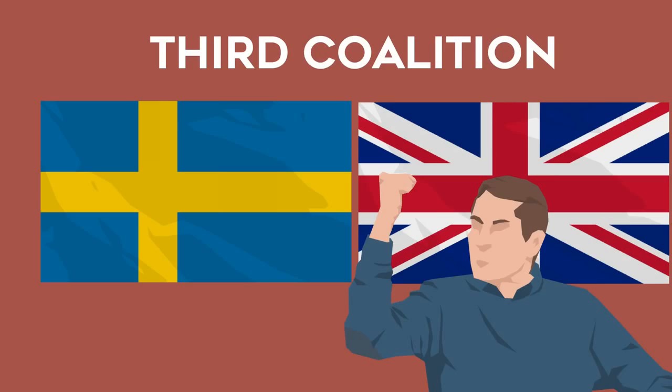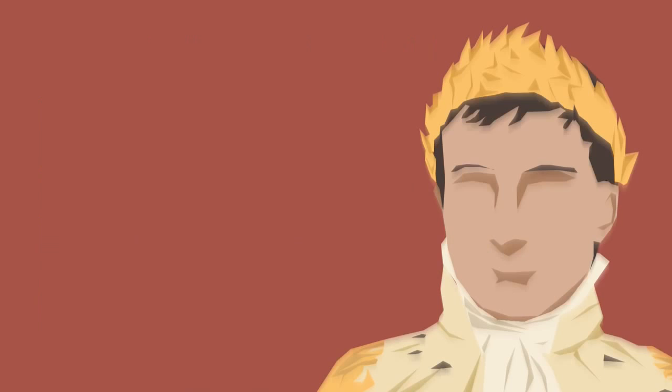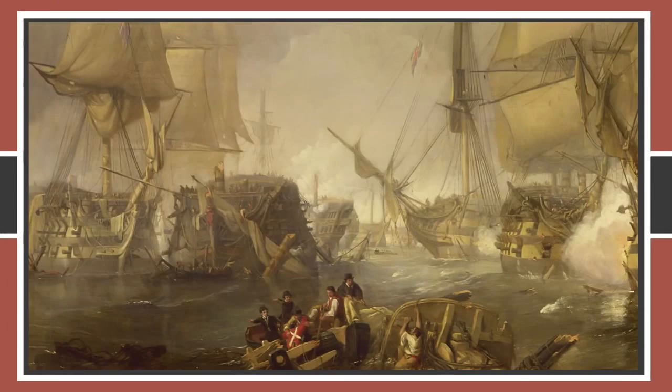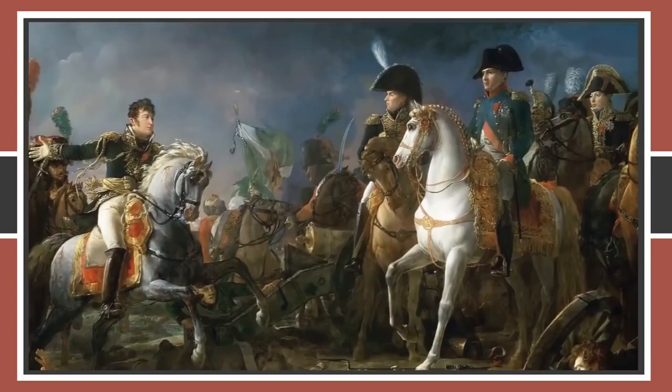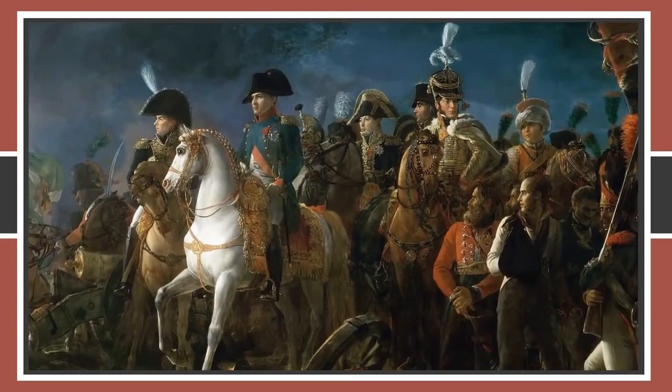Napoleon planned to invade Britain to end their rivalry once and for all, but France's navies were crushed by the British. On land though, Napoleon was unstoppable, occupying Vienna and crushing the Austrian and Russian armies, forcing their surrender. The Holy Roman Empire was dissolved, the Italian peninsula was unified as the Kingdom of Italy under Napoleon's control, and he reorganised the German states into the Confederation of the Rhine.